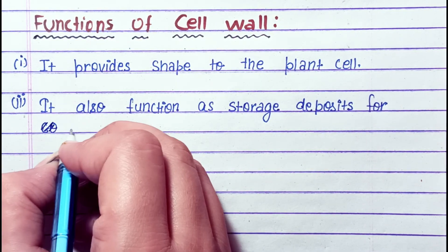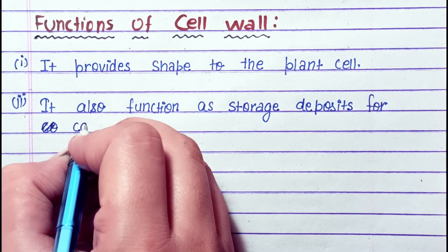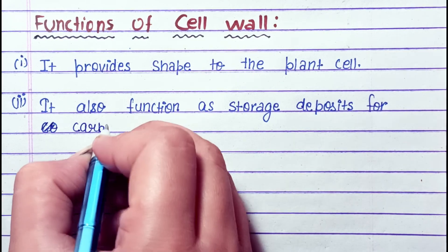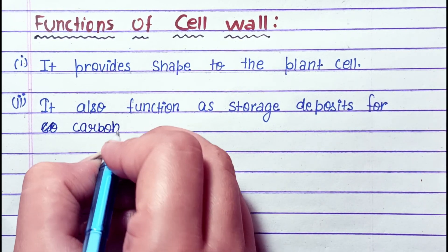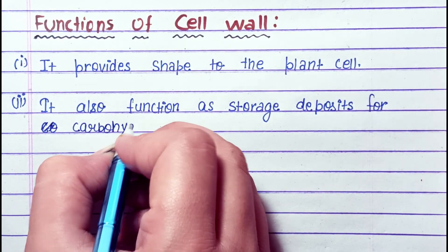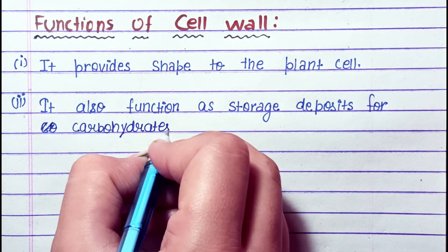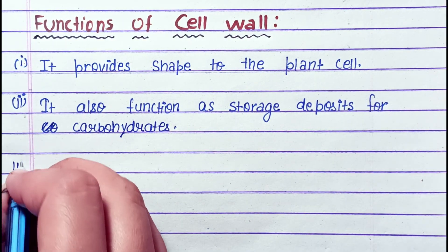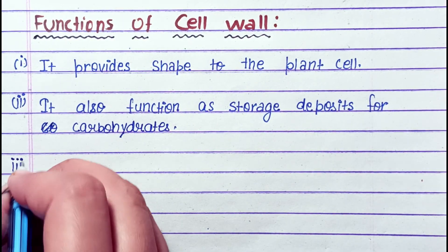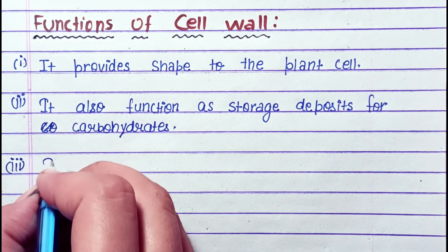Functions of cell wall: It provides shape to the plant cell. It also functions as storage deposits for carbohydrates.